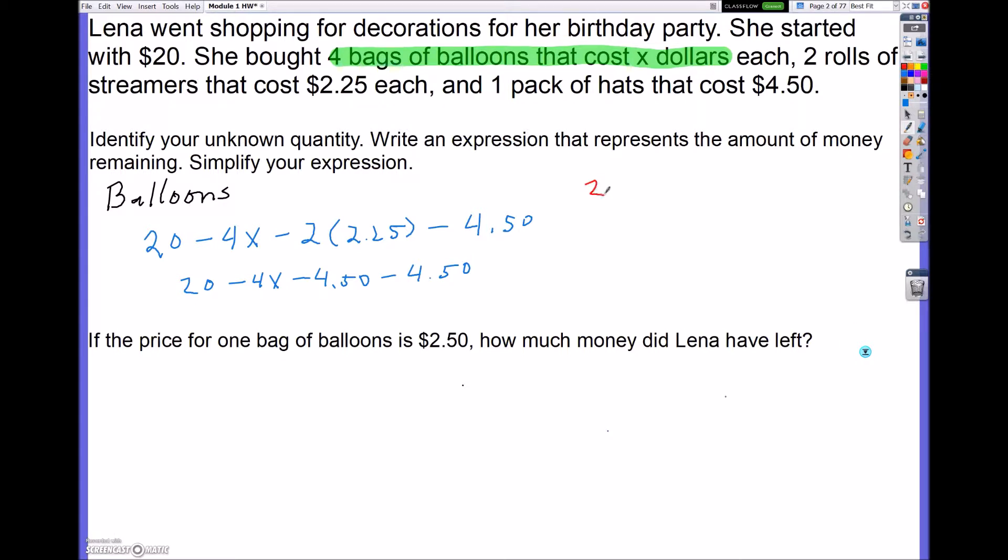I'm going to rewrite this just a tad. And it's going to look like $20 minus... now I'm going to combine these two right here, and that's going to be minus $9 minus 4x. And this will simplify to 11 minus 4x.